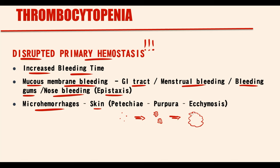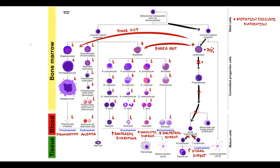Thrombocytopenia causes bleeding from mucous membranes, primarily from the GI tract, as well as frequent nosebleeds (epistaxis). Microhemorrhages develop and manifest on the skin as petechiae and purpura. When lymphoblasts crowd normal cells out of the bone marrow, those cells cannot simply disappear — they must find shelter somewhere else.